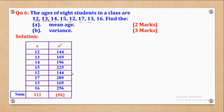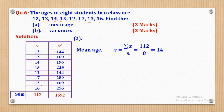Now for part A, the mean is given by the formula: mean = summation of X divided by N. The summation of X is 112, and N is the number of items which is 8. So 112 divided by 8 gives a mean of 14.